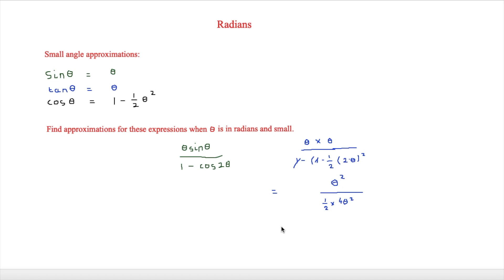So we now have θ squared over 2θ squared. The θ squared terms cancel, leaving just one half. That is how you use small angle approximations to simplify an expression — getting rid of the sines, cosines, and tangents.